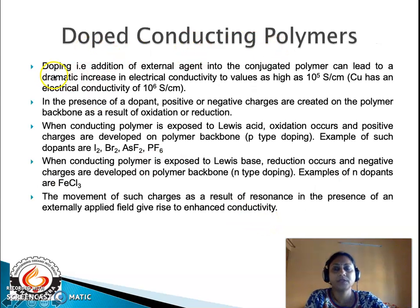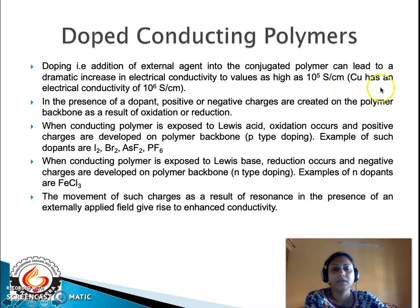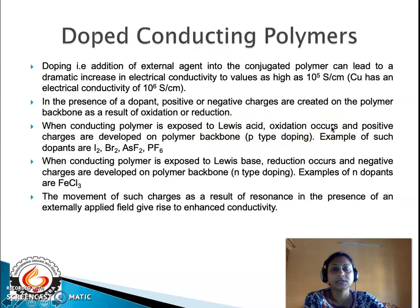What is doped conducting polymers? Doping is the addition of an external agent into the conjugated polymer that can lead to a dramatic increase in electrical conductivity to values as high as 10 to the power 5 Siemens per centimeter. Copper has an electrical conductivity of 10 to the power 6 Siemens per centimeter. In the presence of a dopant, conjugated polymers exhibit positive or negative charges as a result of oxidation or reduction. When a conjugated polymer is exposed to a Lewis acid, oxidation occurs — loss of electrons — and positive charges are developed on the polymer backbone. This is called p-type doping. Examples of such dopants are iodine, bromine, arsenic fluoride, and phosphorus hexafluoride.